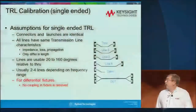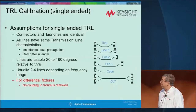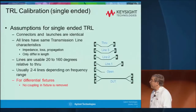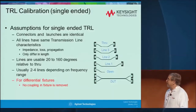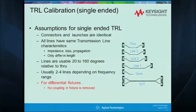Some assumptions quickly on TRL: first, you need a through, which is the left fixture and the right fixture put together. Then you may need one or more lines to cover the frequency range, a reflect of some kind — either an open or a short — and ultimately you have a DUT that you're going to measure. Most people don't pay attention to the assumptions, but basically all the connectors and launchers are supposed to be identical, all lines have the same transmission characteristics and only differ in length. You use lines to a maximum of 20 to 160 degrees, which is why you need more than one line. And if you're doing any differential fixturing, coupling is not removed.